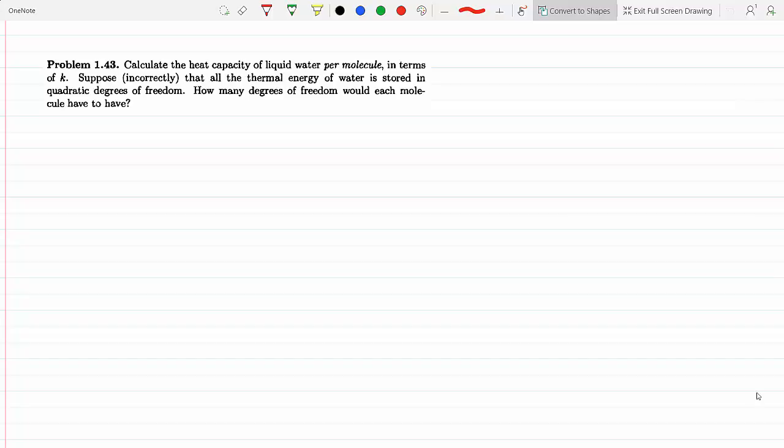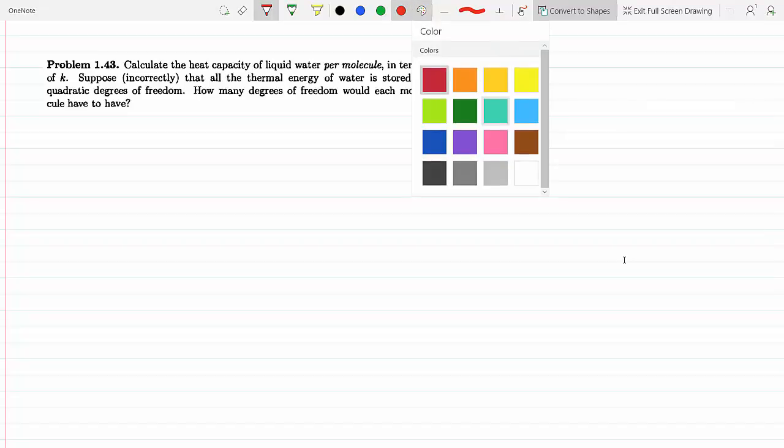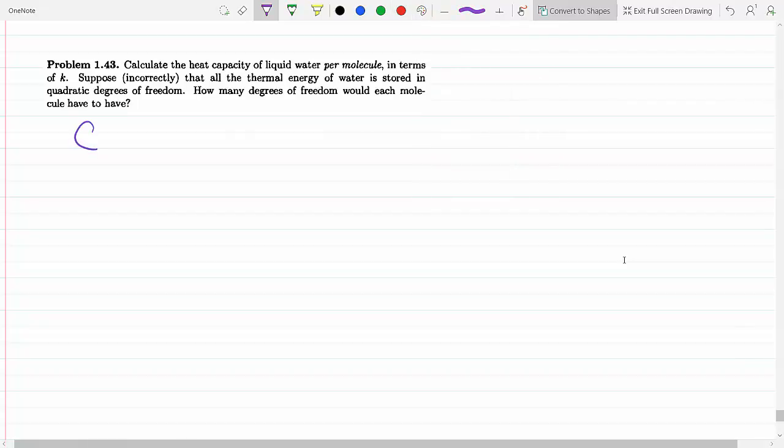Calculate the heat capacity of liquid water per molecule in terms of K. Let's do that now. We know that the specific heat capacity of water, C for water, is 4.186 joules over grams Celsius.